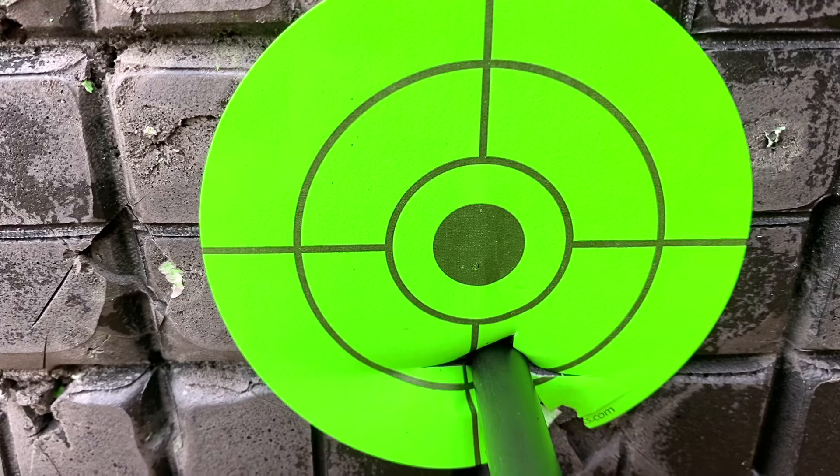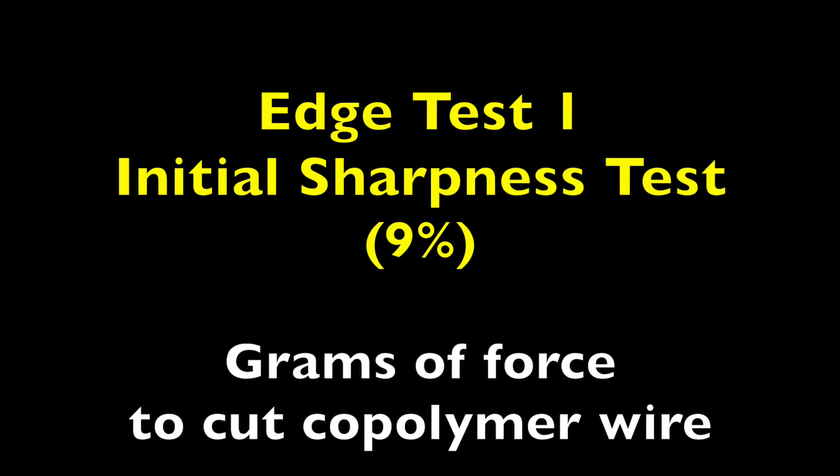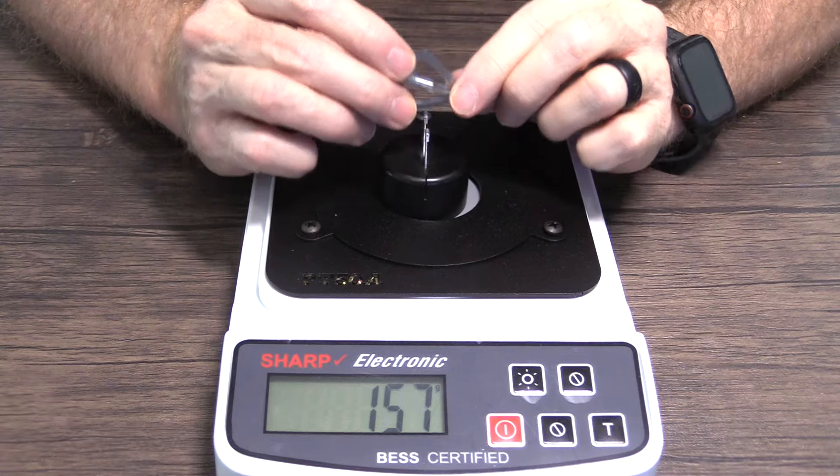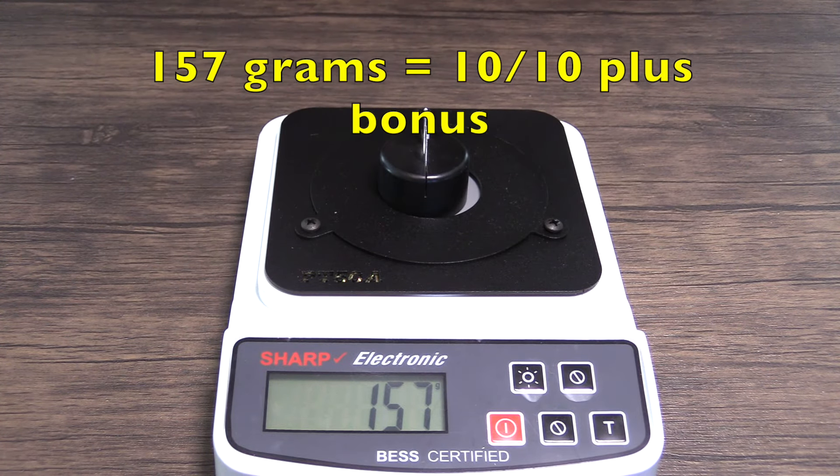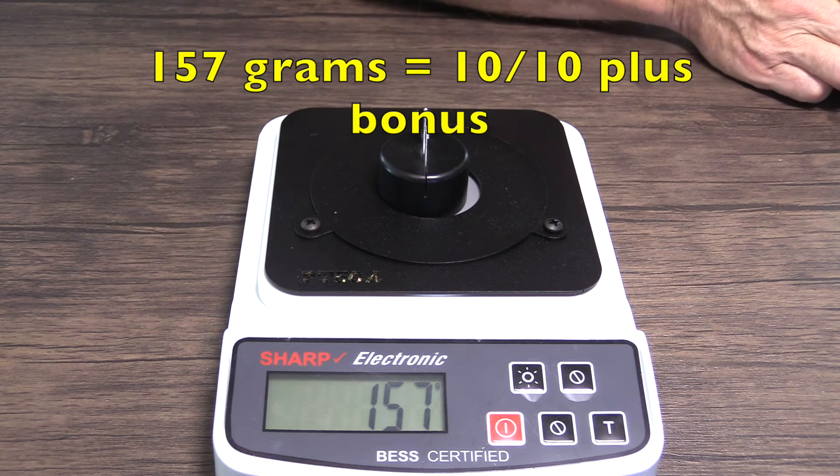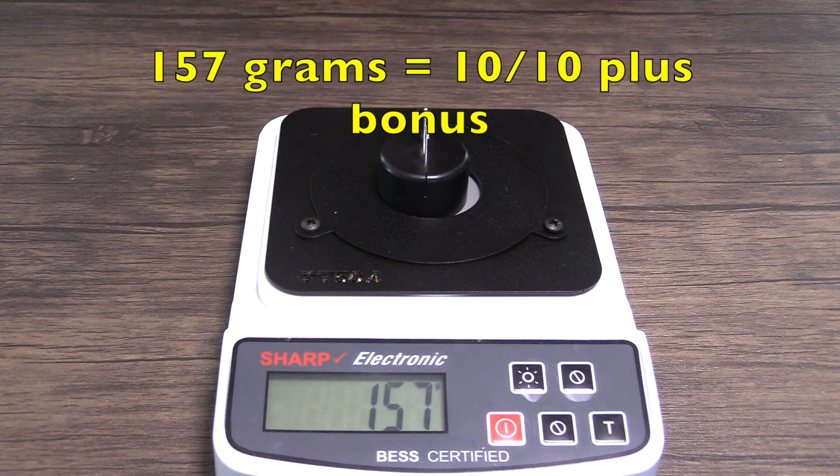The Revival got a solid nine ring. It took 157 grams of force to cut through the wire, which is a 10 on a 10-point scale. Plus it'll get a bonus for being under 200 grams.